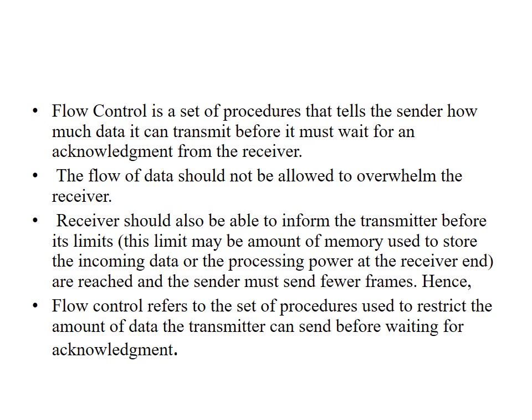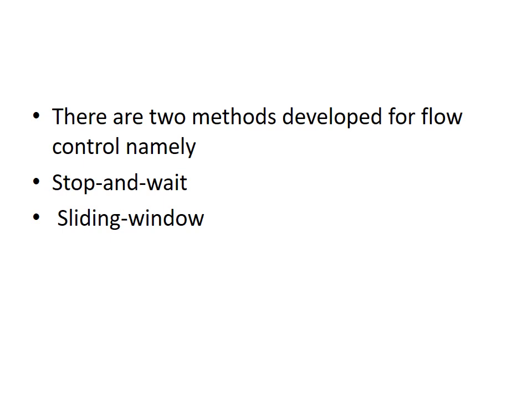This can be done through error control and error correction techniques. Flow control refers to the set of procedures used to restrict the amount of data the transmitter can send before waiting for an acknowledgement. There are two different methods for flow control: one is the stop-and-wait protocol method, and the other is the sliding window protocol method.